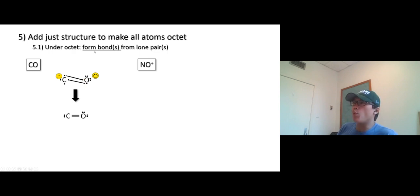What do we do? We're going to form a bond. Carbon needs two more, so it needs one more bond. Form a bond from lone pair. We're going to take a lone pair of oxygen here, form a bond, so we have a triple bond here. In this case, check if everyone's octet.